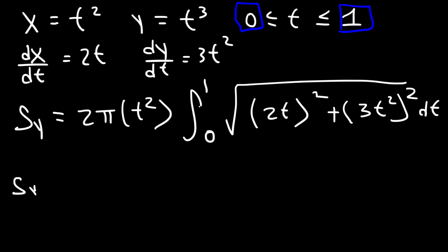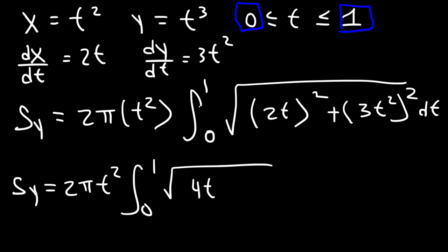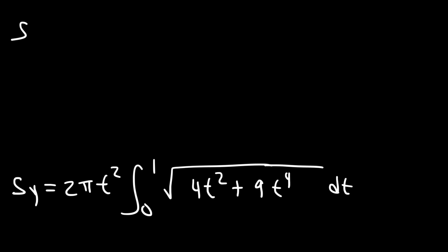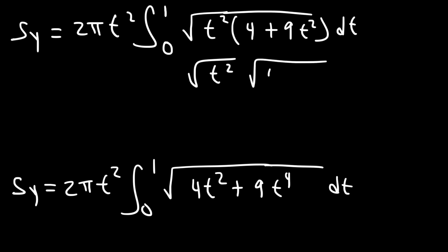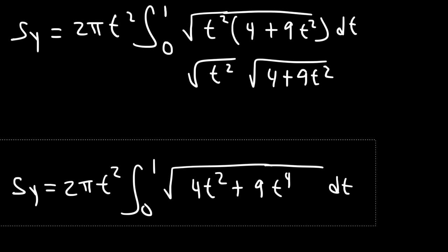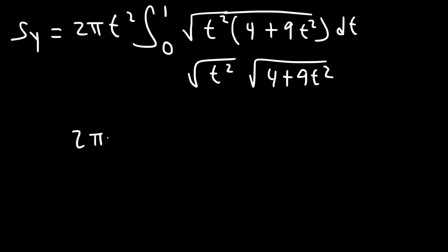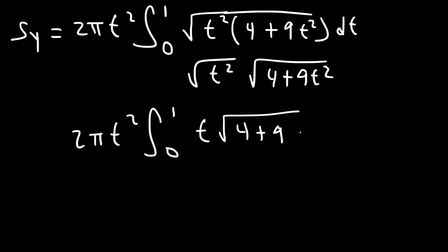Now let's simplify the expression. We have 2π t squared. 2t squared gives 4t², and 3 squared is 9, so t² squared is t to the 4th, giving 9t⁴. Inside the radical, we can take out a t squared: the square root of t² times (4 plus 9t²). Separating into two radicals, the square root of t² becomes t.